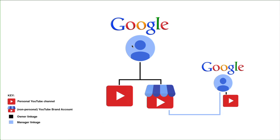That is really important to understand when it comes to ownership. The one YouTube channel — the personal YouTube channel, represented here by a plain YouTube player — is owned by the Google account and is closely linked with it. It represents the person, so it will have that person's first and last name.